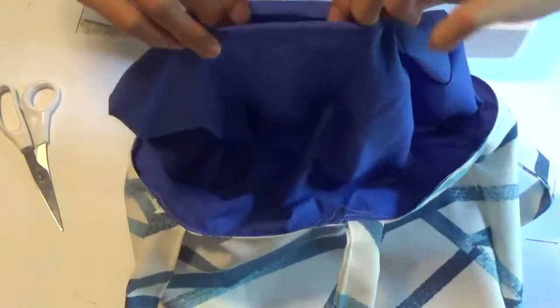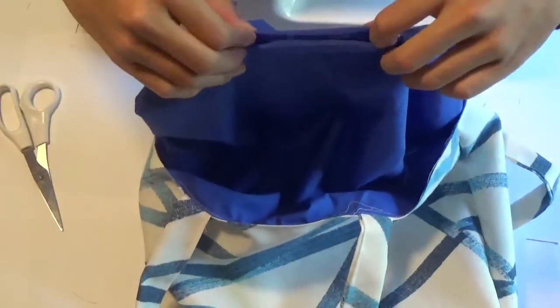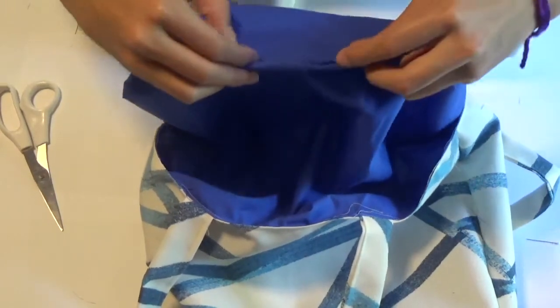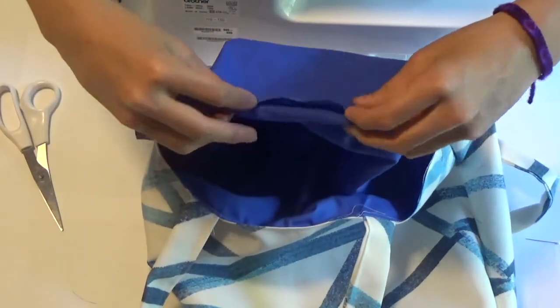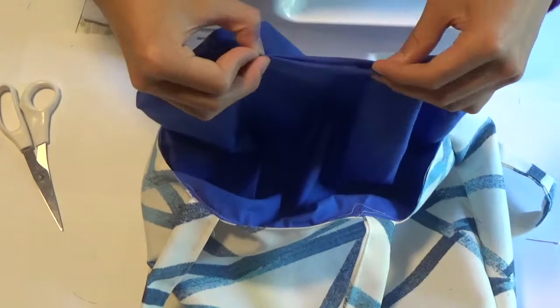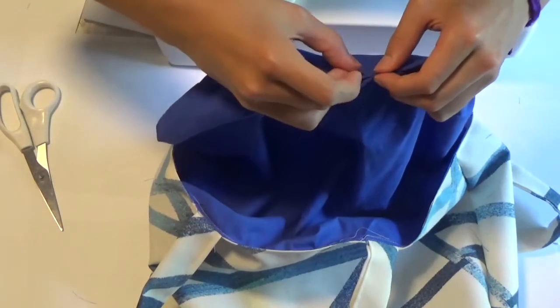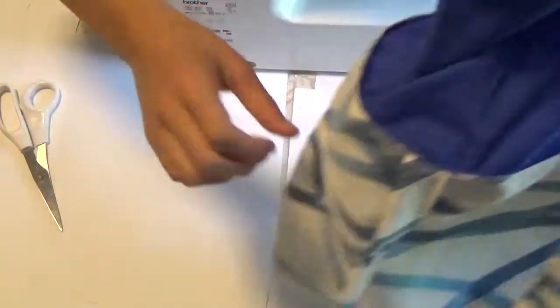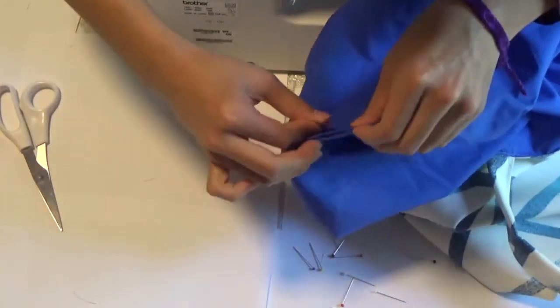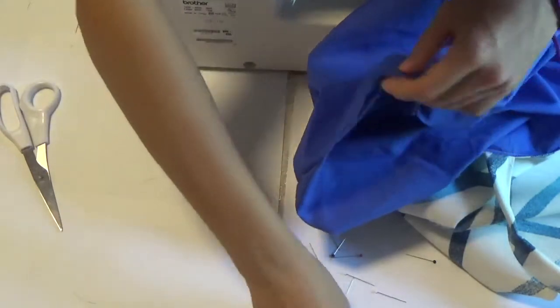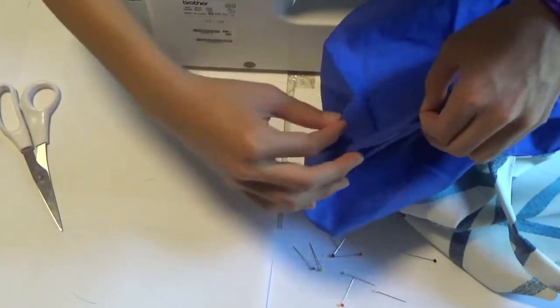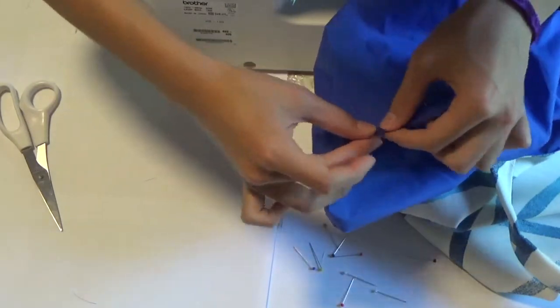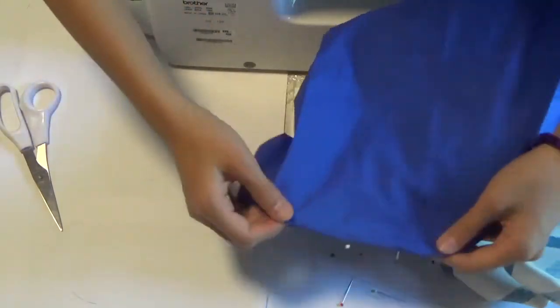Okay, so more pinning, but this is the last time. So remember that four finger gap you made in the lining. You have to sew that closed. Pull that out from inside of the bag and pin the opening by pulling the edges with your fingers. Sew as close to the edge as possible.